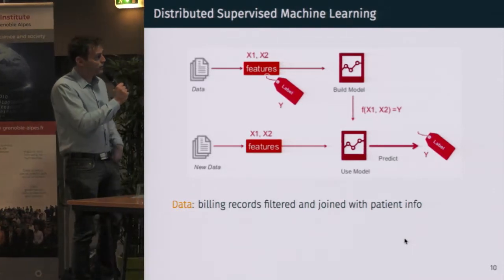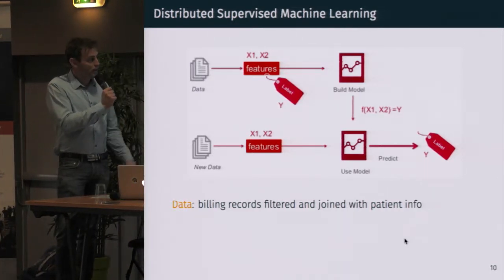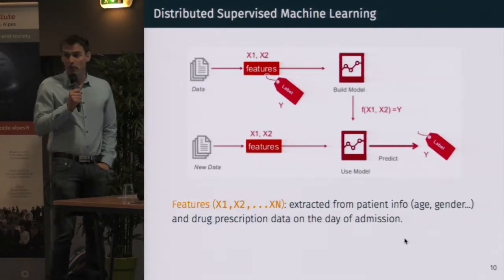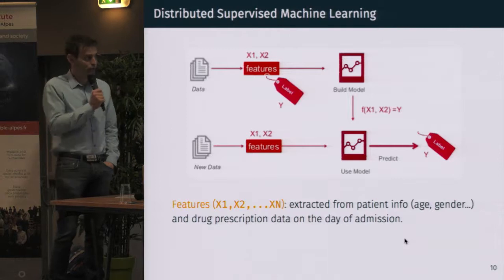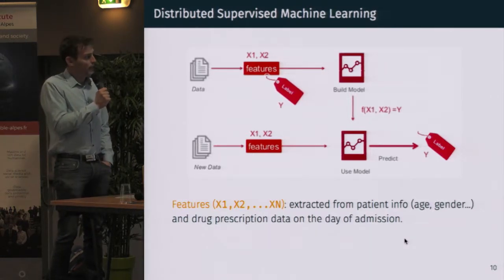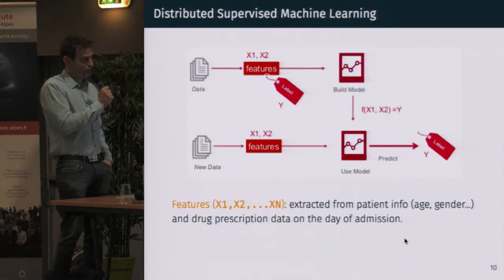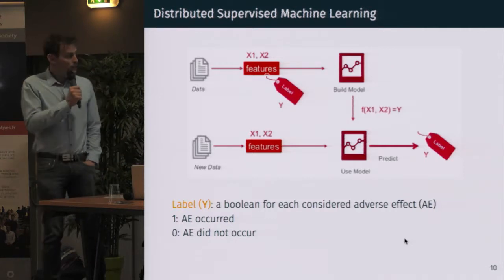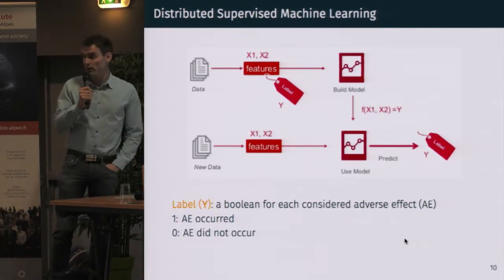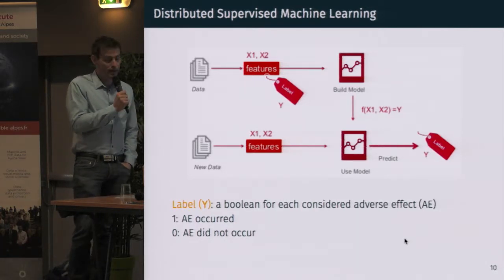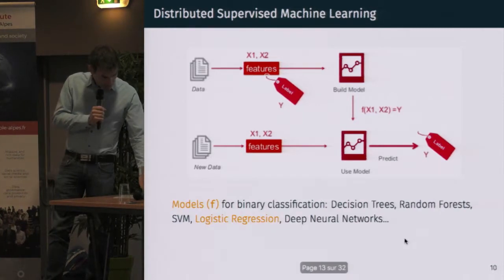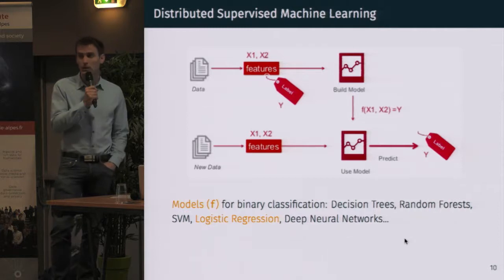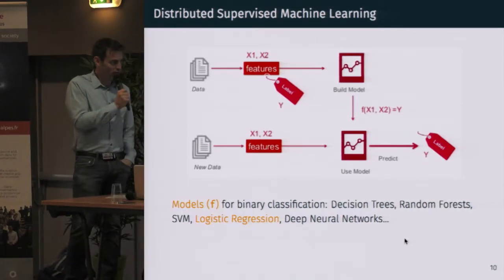The data we consider are composed of billing records filtered and joined to be enriched with patient information. For features, we extract patient information such as age, gender, and admission type, as well as all data related to drug prescriptions on the day of admission. For labels, we consider Boolean labels for each adverse effect — true whenever the adverse effect actually occurred. We tried several models for binary classification, including decision trees, random forests, support vector machines, logistic regression, and we are also experimenting with deep neural networks.